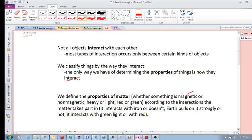We define these properties, whether something is magnetic or not magnetic, heavy or light, what color it is, red or green, what mass it is, according to the interactions that this matter takes part in. We define something to be magnetic if it interacts with iron. We define something to be heavy or light depending on how the earth pulls on it, whether it pulls on it strongly or not so strongly.